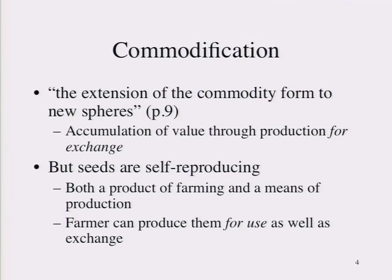That is in many ways what Kloppenberg is trying to explain — how could it become the case that the seed is a commodity? If you look back as little as 100 years ago, most farmers didn't rely on the market for most of their seed. They simply held seed from the year before and replanted it — the seed part of the farming economy was not commodified. For it to become commodified, there would need to be, in Kloppenberg's formulation, a process of primitive accumulation to make it a commodity. That's in many ways the story he's going to tell in this book.